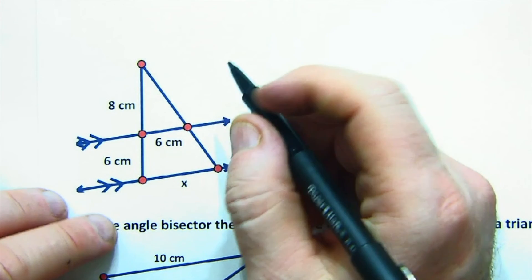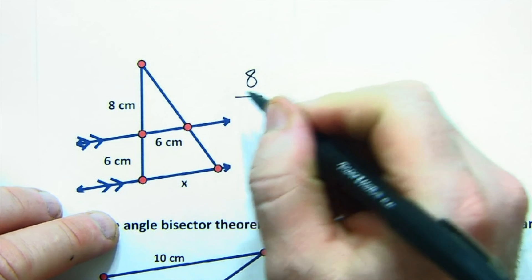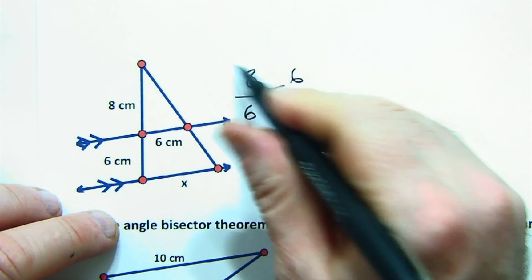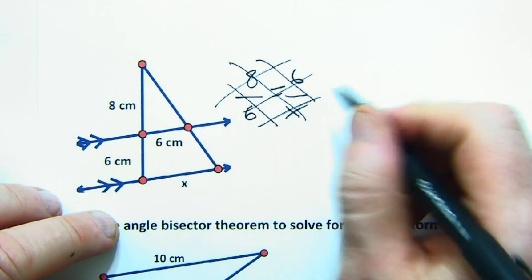Same thing here. I can't get enough of these because they're just so common. 8, don't, don't do this. 8 is to 6, 6 is to X. Please, please, please don't ever do that to me.